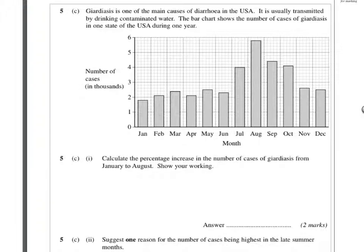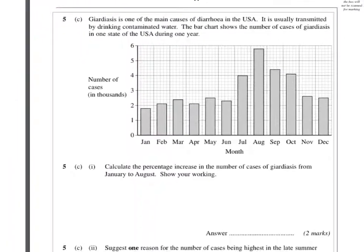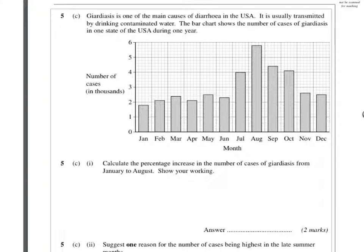Okay, this is a question from June 9. What it's asking you to do is calculate the percentage increase in the number of cases of this diarrhea from January to August.